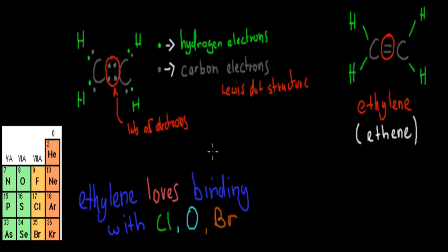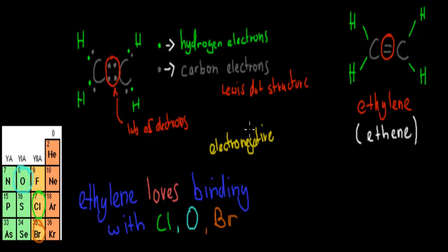Because there's lots of electrons, something interesting happens. Ethylene loves binding with chlorine, oxygen, and bromine — but it's actually more the other way around: chlorine, oxygen, and bromine love binding with ethylene. Looking at the relevant part of the periodic table, we can find chlorine, bromine, and oxygen. They are very electronegative — they love electrons — because they want to have eight electrons in the outer shell. Oxygen is missing two electrons to reach the noble gas stage, while chlorine and bromine are missing one — so they want to grab it really badly.